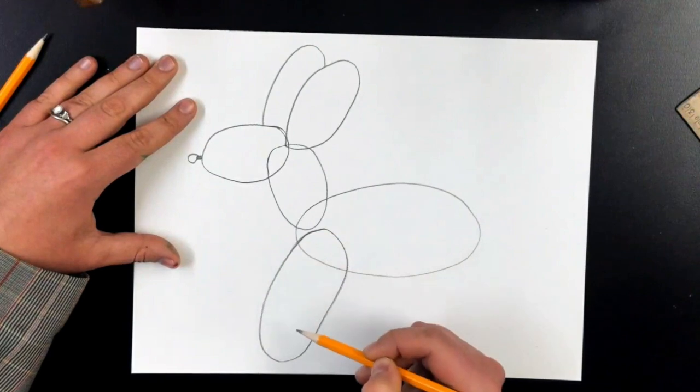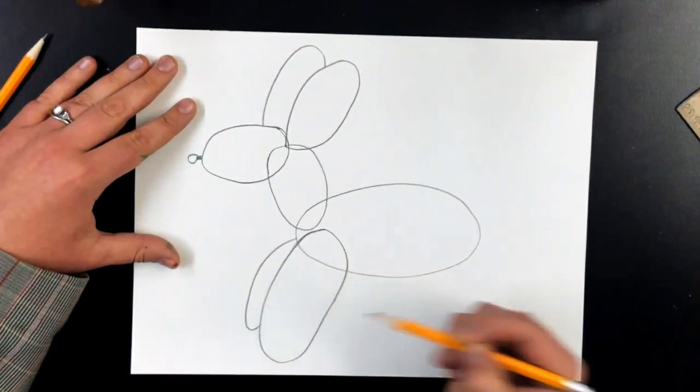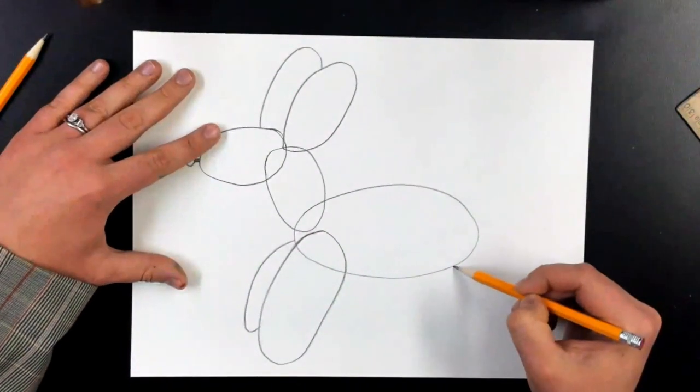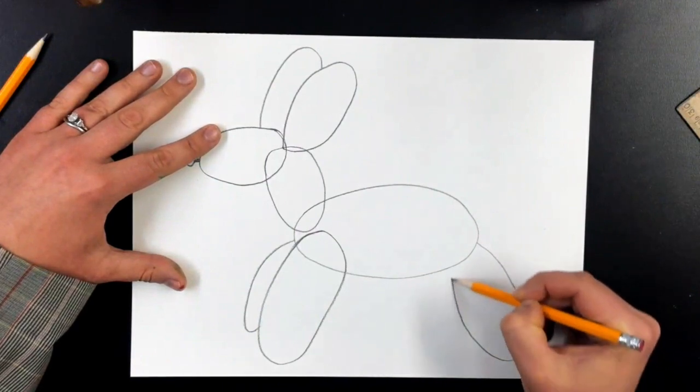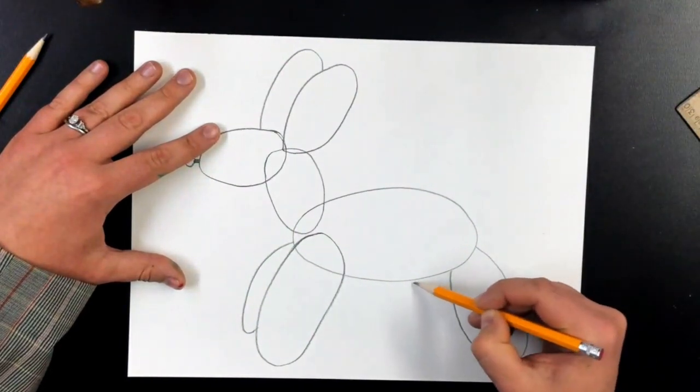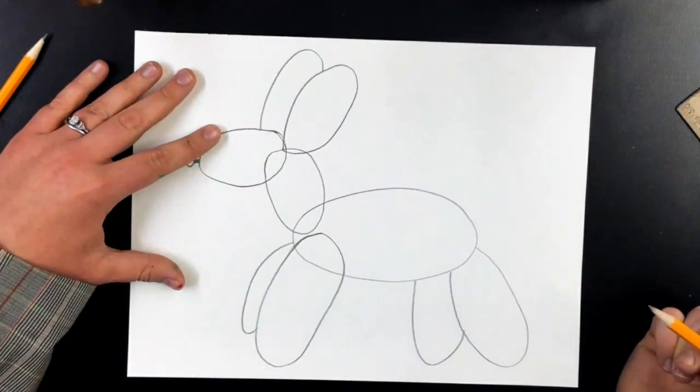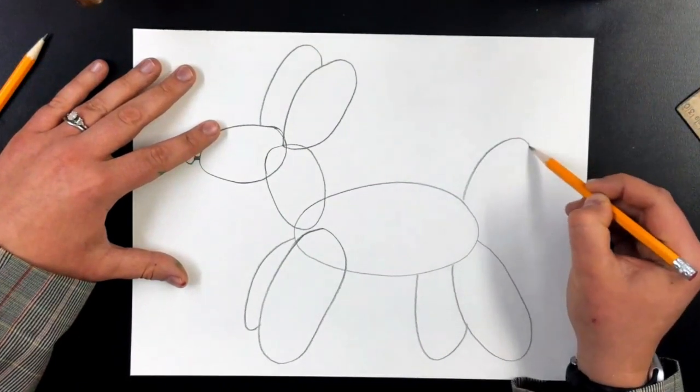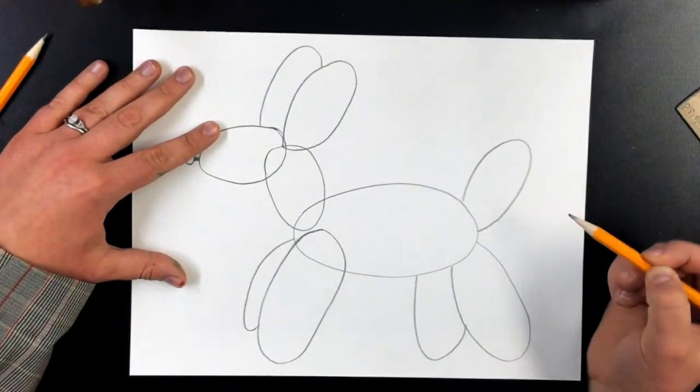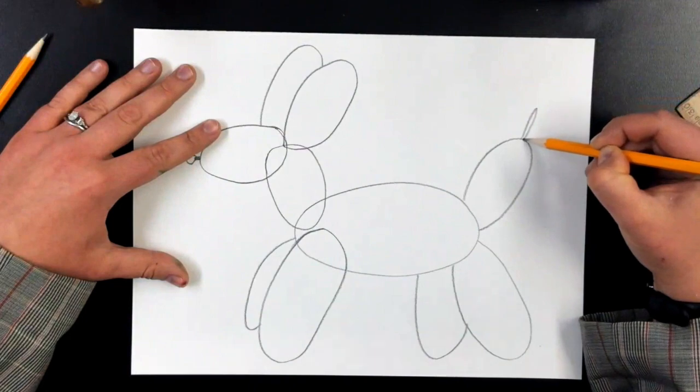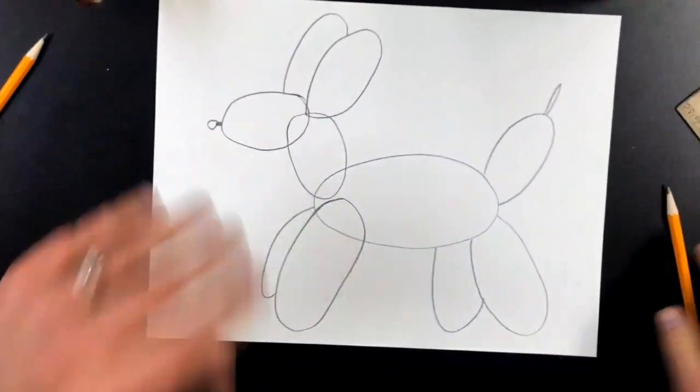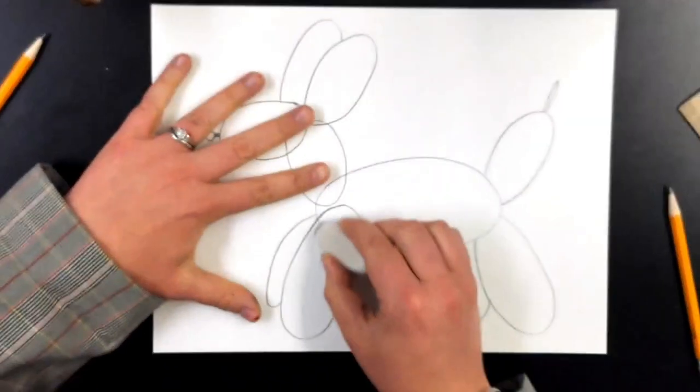We need the legs. We have an oval for the leg, a second oval for the other leg, so we have two legs, three legs, and four legs. And all we're missing is the tail which is another oval, and on the little end of balloon animals it has that extra balloon, so that's the little tip of the tail.